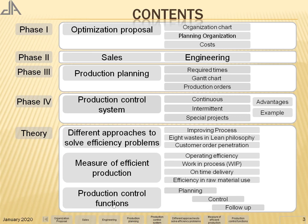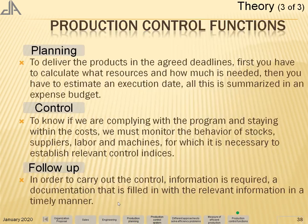Production control function: planning, control, and follow-up. Planning to deliver the products by the agreed deadline — first, you have to calculate what resources and how much is needed.